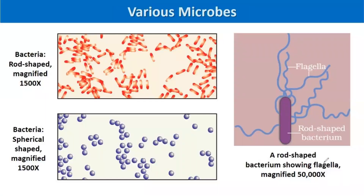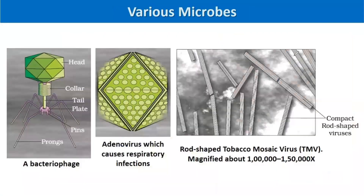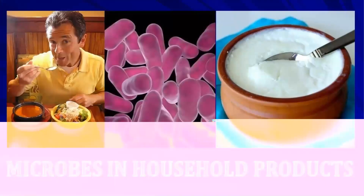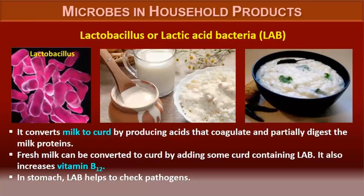Before starting, let us see the different types of microorganisms — bacteria with rod shape, spherical shape, viruses, and fungi. Let's start with the microbes in household products.